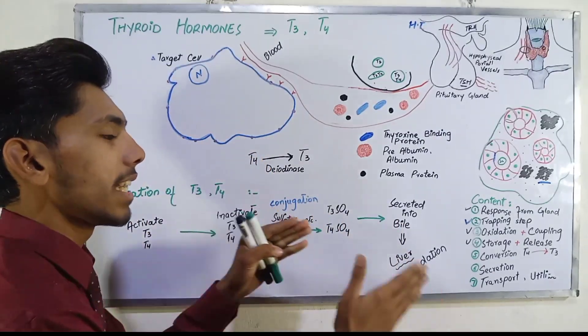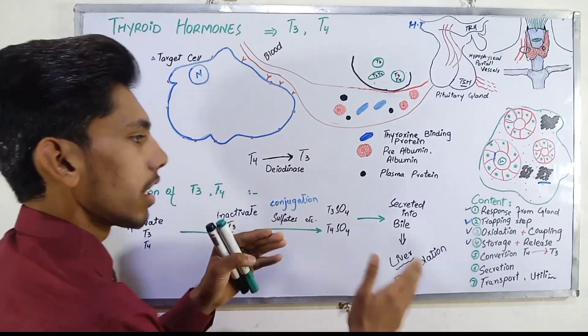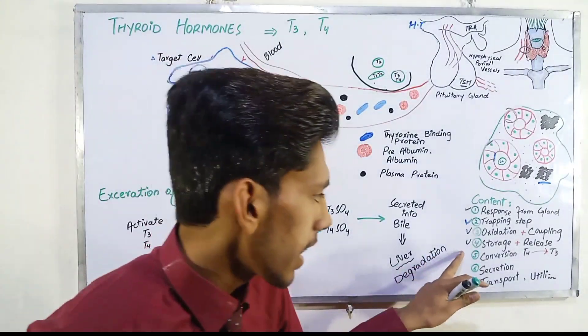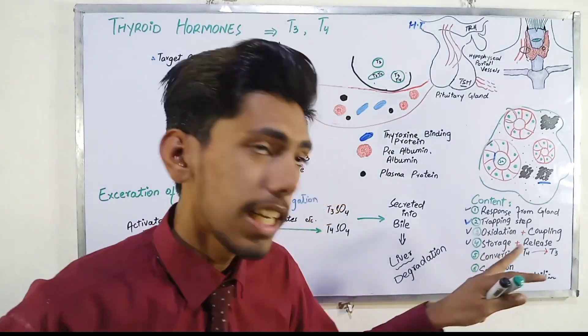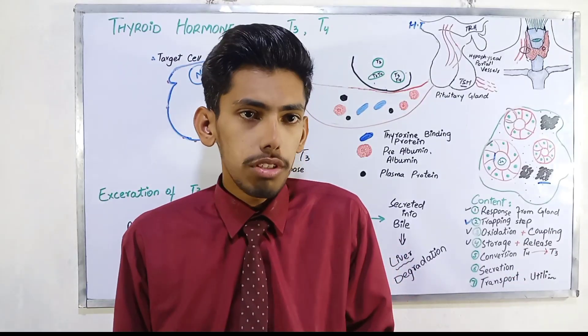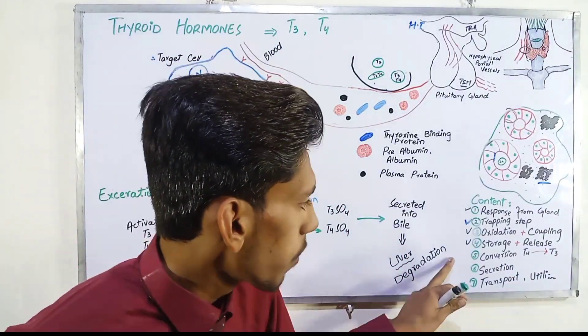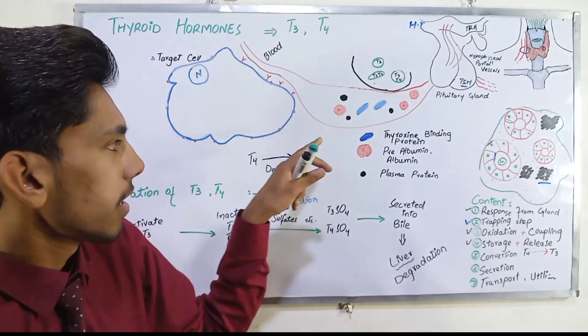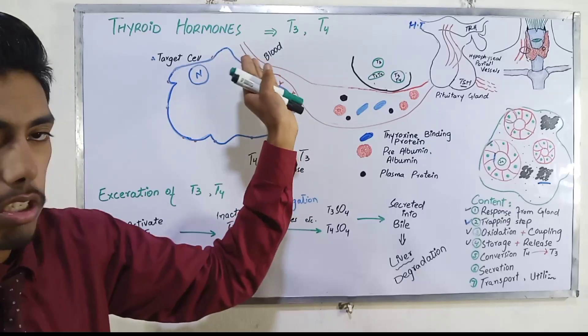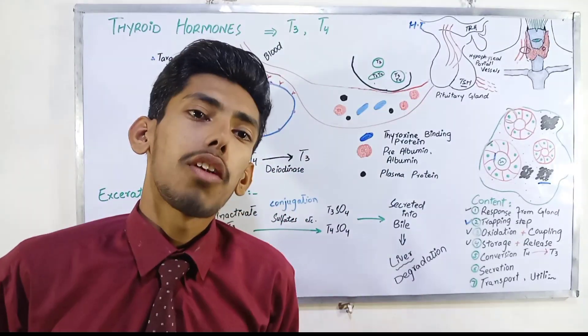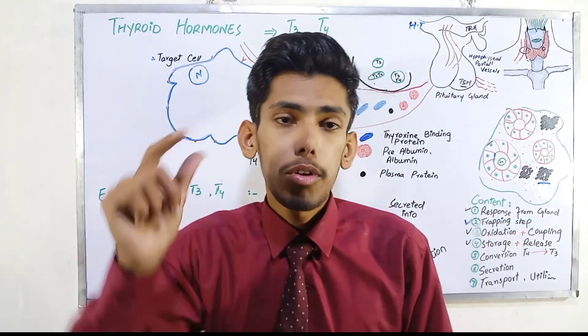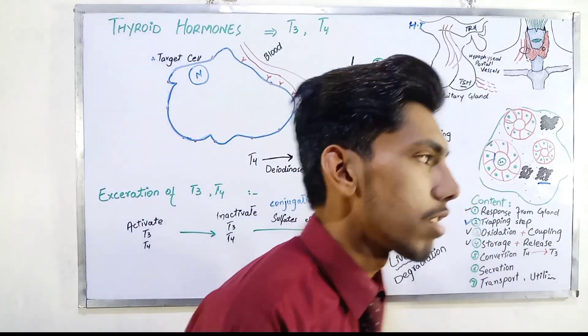We have seen how T3 or T4 formation occurs in follicle cells of thyroid gland. Then we have to see how it can be converted - T4 into T3. Then we will see secretion, how the follicle cells secrete out. Your blood vessels come in, then it will transport to your target tissue and from your target tissue it will go to your target cell and perform its function.